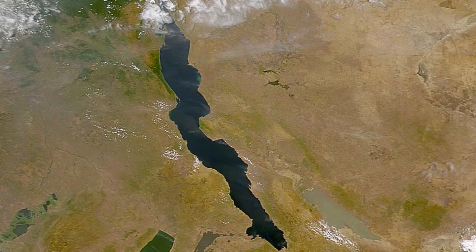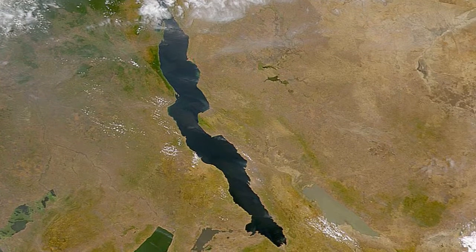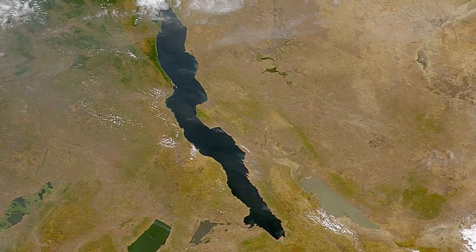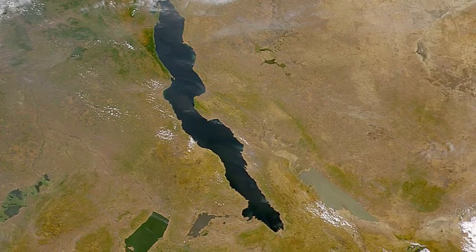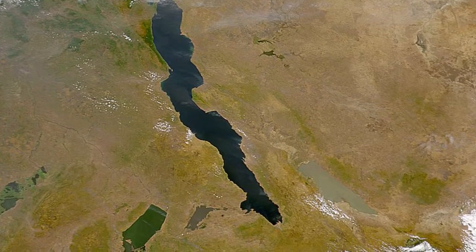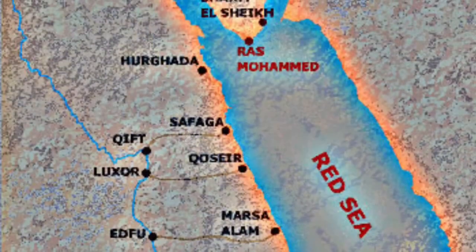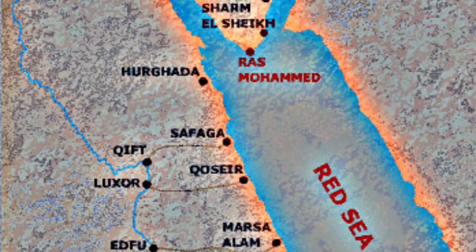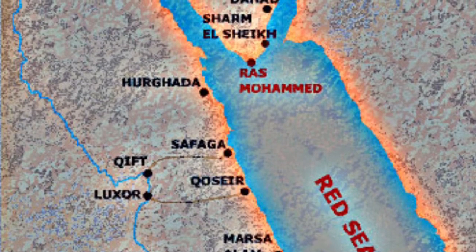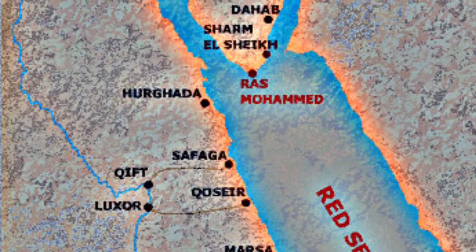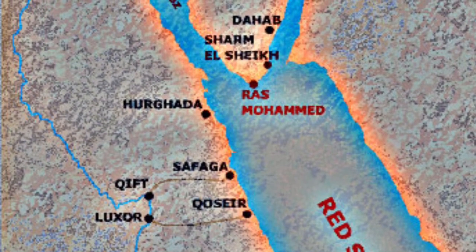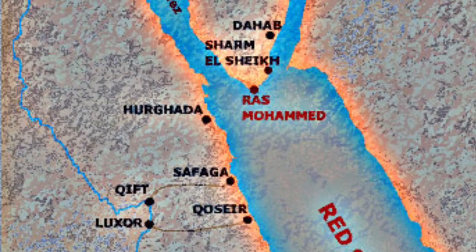In places where plates are pulling apart, new crust is moved down below. These are called divergent boundaries, and they create rifts or valleys. The forming of the Red Sea, where the African and Arabian plates pull apart, is an example of what could happen at a divergent boundary.